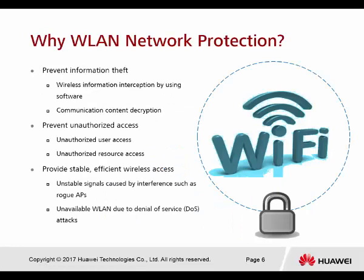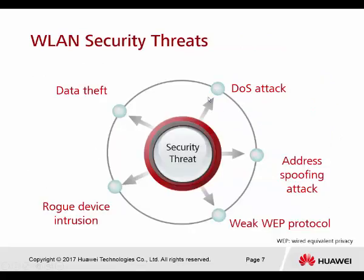WLAN network protection goals include: preventing information theft — such as interception of communication content using software and decryption; preventing unauthorized access, including unauthorized user access and unauthorized resource access; and providing stable, efficient wireless access by addressing unstable signals caused by interference such as rogue APs, and preventing inoperable WLAN due to denial of service attacks. Security threats include DOS attacks, address spoofing attacks, WEP protocol vulnerabilities, rogue device intrusion, and data theft.